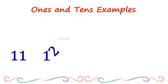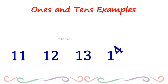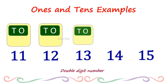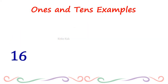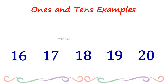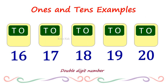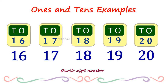Now let's see this example. We have numbers 11, 12, 13, 14, 15, and these are the place values for these double digit numbers. Let's continue till number 20: 16, 17, 18, 19, and 20. Since these are all double digit numbers, these will be their place values. Like 6 has place value of 1s and 1 has place value of 10s. Likewise, for 20, 0 has place value of 1s and 2 has place value of 10s.